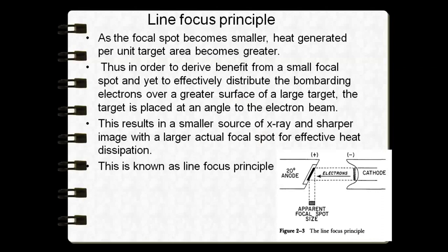To achieve a smaller focal spot with heat spread over a wide area, the anode or target is angulated at a 15 to 20 degree inclination. With this angulation, the electrons bombarding the target produce an apparent focal spot size of around 1×1 mm. At 90 degrees, where electrons hit perpendicularly, the focal spot size is larger — around 1 to 3 mm. This is why we use the line focus principle to attain a smaller focal spot for a sharper image.